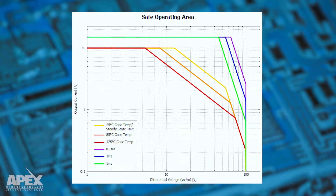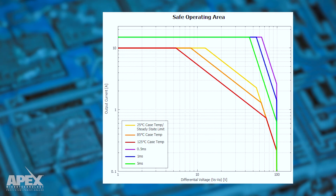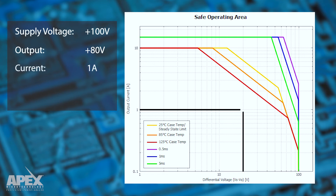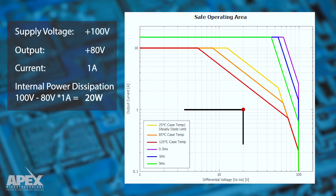For example, if you set your supply voltage for a power op-amp at 100 volts while driving your output at 80 volts and a current of 1 ampere, then the internal power dissipation of the amplifier will be 20 watts. This is the power dissipated inside the amplifier and not at the load.